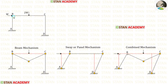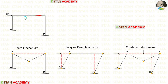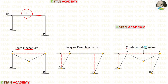In this frame, since there are no loads in the columns, there will be no column mechanism. In the beam BC, we have a point load, so there will be a beam mechanism. Additionally, we will have a sway mechanism and a combined mechanism.